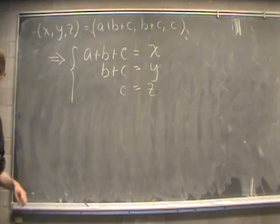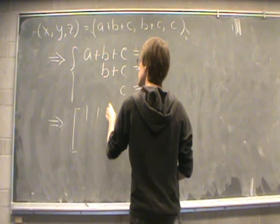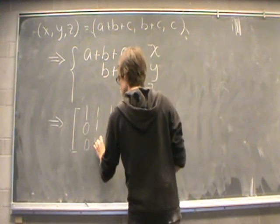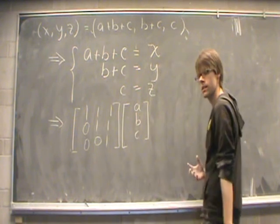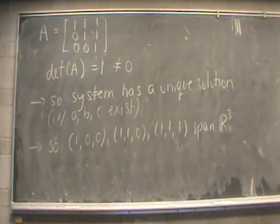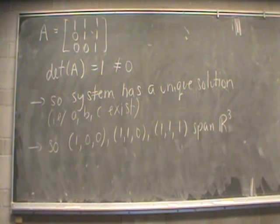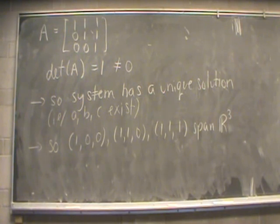We want to know whether values of a, b, and c exist for any (x, y, z). The coefficient matrix is upper triangular with entries 1, 1, 1 / 0, 1, 1 / 0, 0, 1, and the system is Ax = (x, y, z). Since A is upper triangular, the determinant is the product of the main diagonal entries: det(A) = 1. Since the determinant is not zero, the system has a unique solution for every (x, y, z), meaning we can always find a, b, and c. Therefore these three vectors span all of R3.